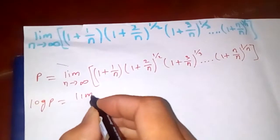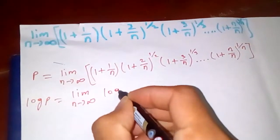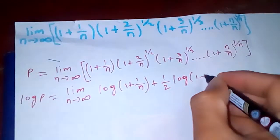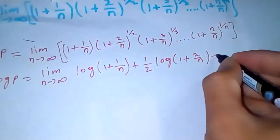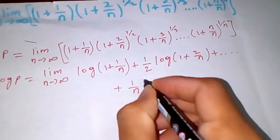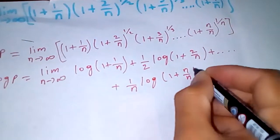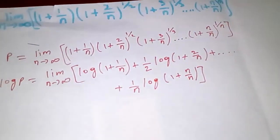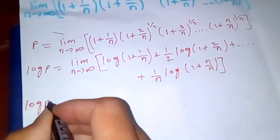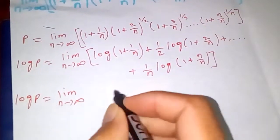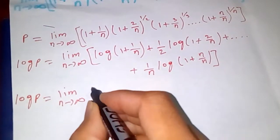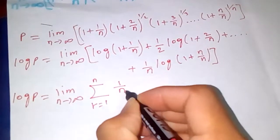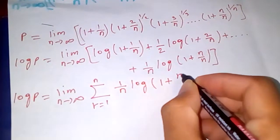So log P is equal to limit as n tends to infinity of: log(1 plus 1/n) plus (1/2) log(1 plus 2/n) plus ... plus (1/n) log(1 plus n/n). We convert this into a summation: sum from r equals 1 to n of (1/n) log(1 plus r/n).